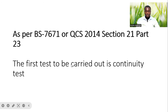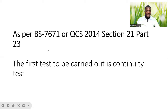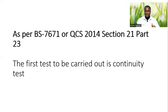The first test to be carried out is the continuity test. As per both BS 7671 and QCS 2014 section 21 by 23, the continuity test is a test that is carried out in electrical installation works after your cables or wires have been pulled — that is when the electrical installation is not yet supplied with electrical power.